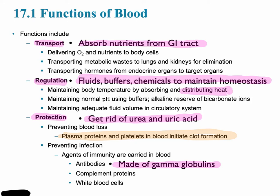Important functions of the blood include transport, regulation, and protection. There are important chemicals that are transported throughout the bloodstream constantly, ranging from nutrients to different gases. Oxygen and carbon dioxide, for example, are transported on the hemoglobin of the red blood cell. Metabolic waste goes to the lungs and kidneys for elimination, such as carbon dioxide that we exhale. There is also the transportation of hormones from the endocrine organs to the target organs.